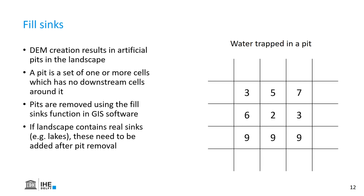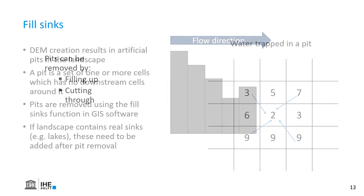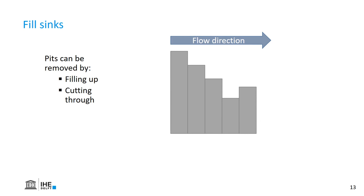Here we see a digital elevation model where water is trapped in the center cell, which is much lower than the surrounding cells, so there is no possibility to drain towards the outlet. The fill-sinks algorithm will either fill up those depressions or cut through. You can see a transect showing the side elevation, where the outlet is downstream. The algorithm can either increase the surface of the depression, or decrease the surface after the depression, so the water is routed to the outlet.